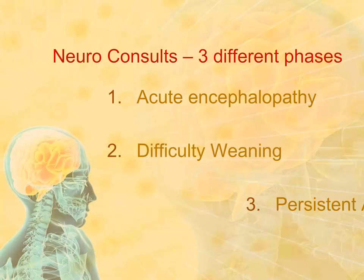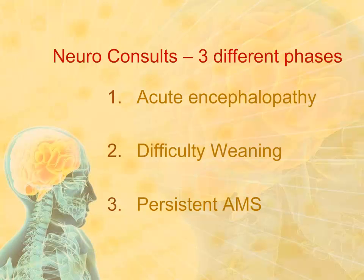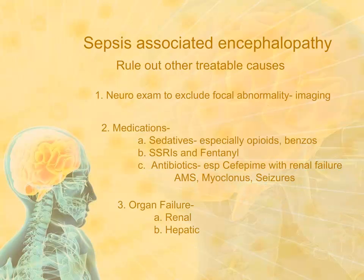Typically, neurologists will be consulted at three different times throughout the course of someone's sepsis illness. The first is acutely when they're encephalopathic. Later on, when they're attempting to wean the ventilator, there may be some issues with neuromuscular weakness. And finally, once the sepsis has resolved, there may be some residual encephalopathy which requires further neurological evaluation.